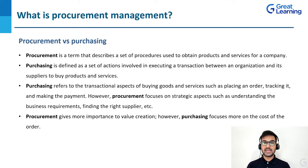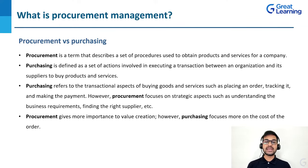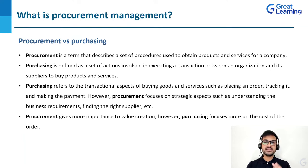In purchasing, things like placing an order, tracking it, and making the payment are involved. In procurement, understanding the business requirements, identification of needs, and finding the right supplier are involved. Procurement gives more importance to value creation, whereas purchasing focuses more on the cost of the order. These two terms are interlinked but not interchangeable — they are two different terms and cannot be used with one another interchangeably.